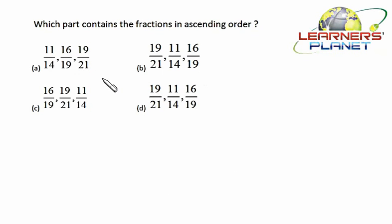Now in this question, which part contains the fractions in ascending order? We have been given three fractions: 11/14, 16/19, and 19/21. In this case, for 11/14, the difference between numerator and denominator is 3, and in 16/19 still it is 3.